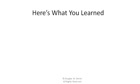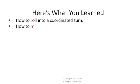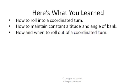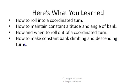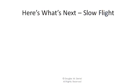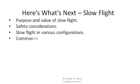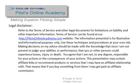So here's what you've learned: how to roll into a coordinated turn, how to maintain constant altitude and angle of bank, how and when to roll out of a coordinated turn, and how to make constant bank climbing and descending turns. Here's what's next: the purpose and value of slow flight, safety considerations, slow flight in various configurations, and common mistakes. Thanks very much, and we'll talk again soon.